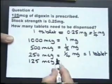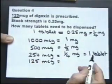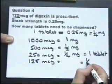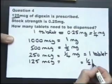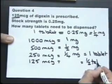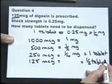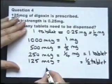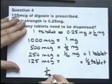We need 125 micrograms, which is half of 250, so we actually need half of a tablet. And there's our answer: half of a tablet.